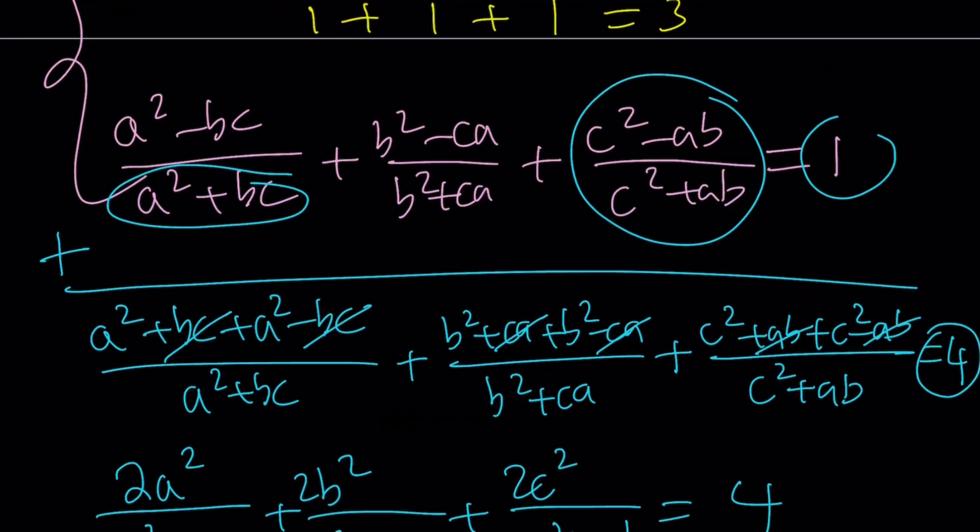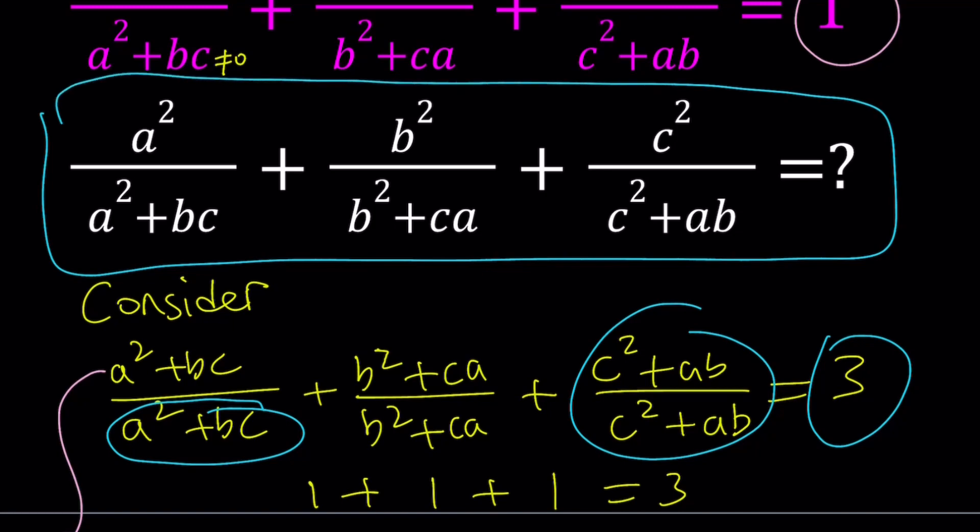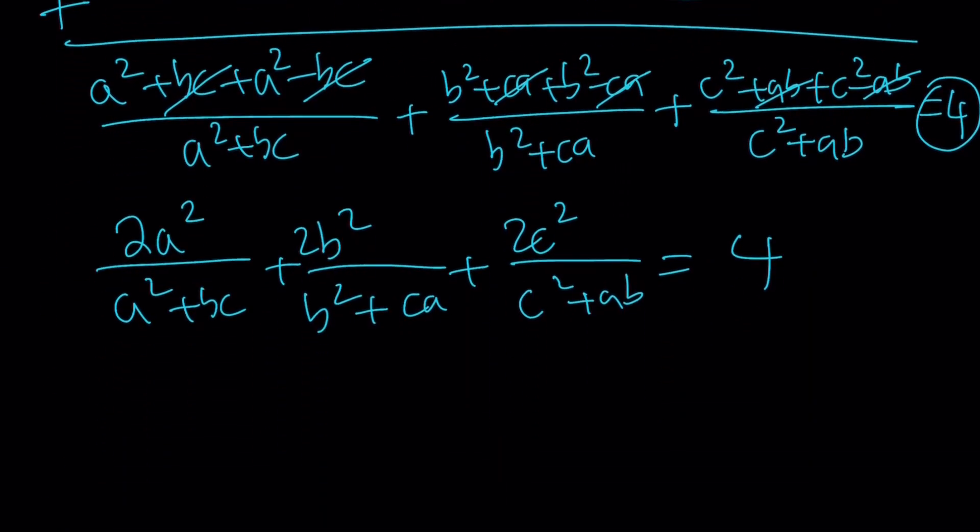Now, what are we looking for? We're looking for this expression, and we actually found it. What we found is actually 2 times that. If you take out a 2 or divide both sides by 2, you get a squared over a squared plus bc, plus b squared over b squared plus ca, plus c squared over c squared plus ab. And that is equal to 2, and that's what we were looking for.